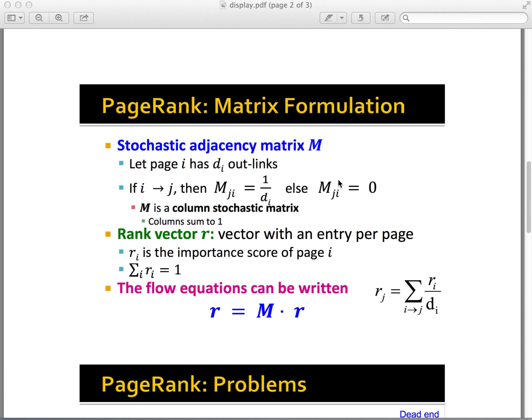We define the stochastic adjacency matrix M to describe what happens to random surfers after one step. This matrix M has n columns and n rows if there are n pages. The element M in row j and column i equals 1 over di if page i has di arcs out and one of them is to page j, otherwise M equals 0.